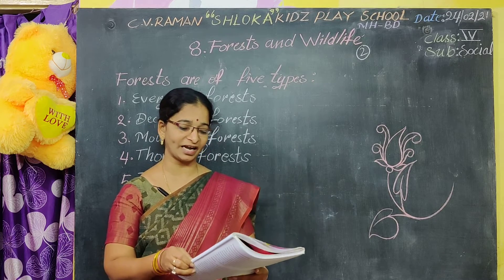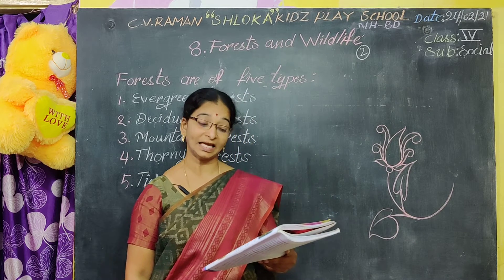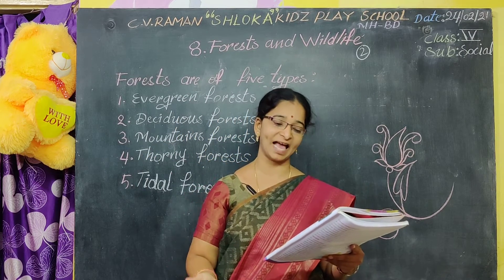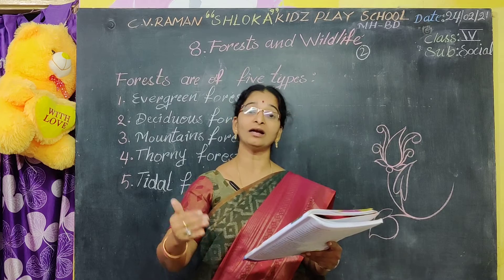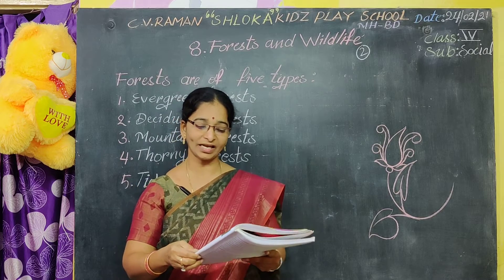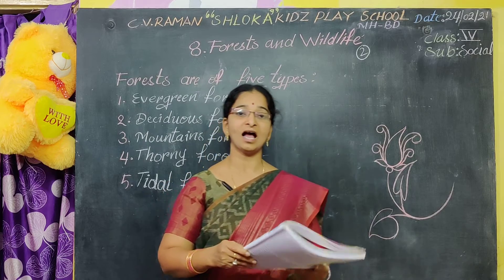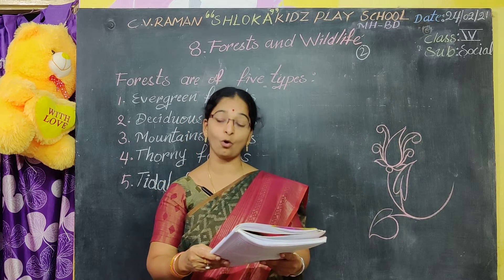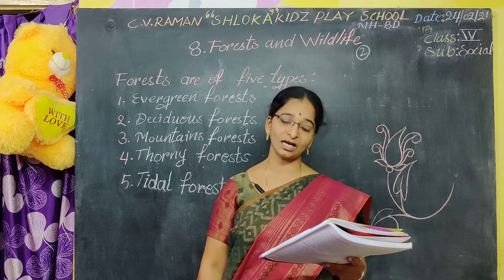The Himalayas region has belts of different kinds of forests depending on the rainfall and the height of the region. So according to the rainfall conditions and the height of the regions, the Himalayas have different kinds of forests. On the higher mountain slopes, these forests are called coniferous forests. Whatever coniferous forest trees are there, these are grown in the cool climate only.